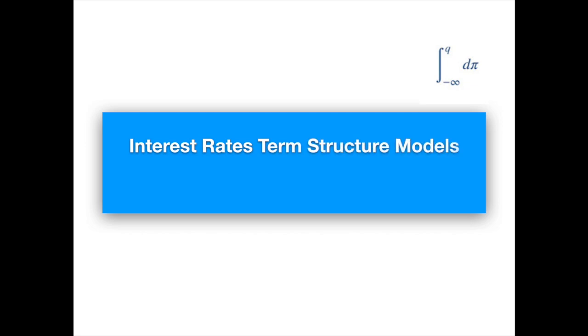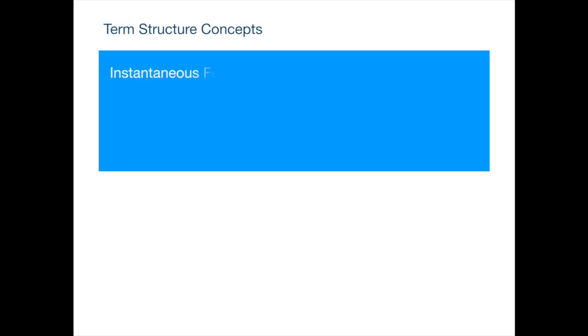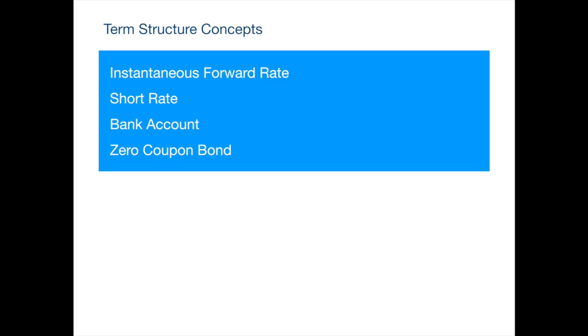Hello everyone and welcome to QuantPy. We are going to move to the interest rate term structure models now, and I'm going to start by introducing the term structure and explaining a few important concepts related to it, such as instantaneous forward rates, short rates, bank accounts, and zero coupon bonds, and more importantly how they are linked together. I'm going to start with visuals — charts and tables — and then move to the mathematics. If you would prefer to start with the mathematics, please fast forward to 7:10.